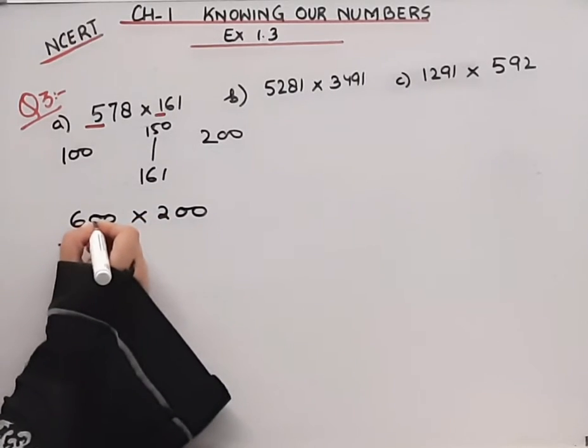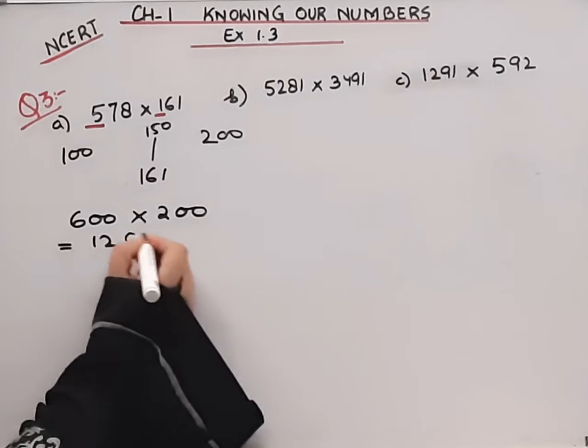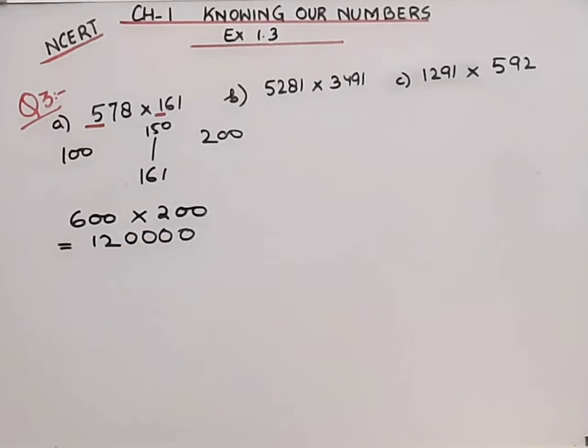How many zeros are there? One, two, three, four. So this answer is the answer. Okay.